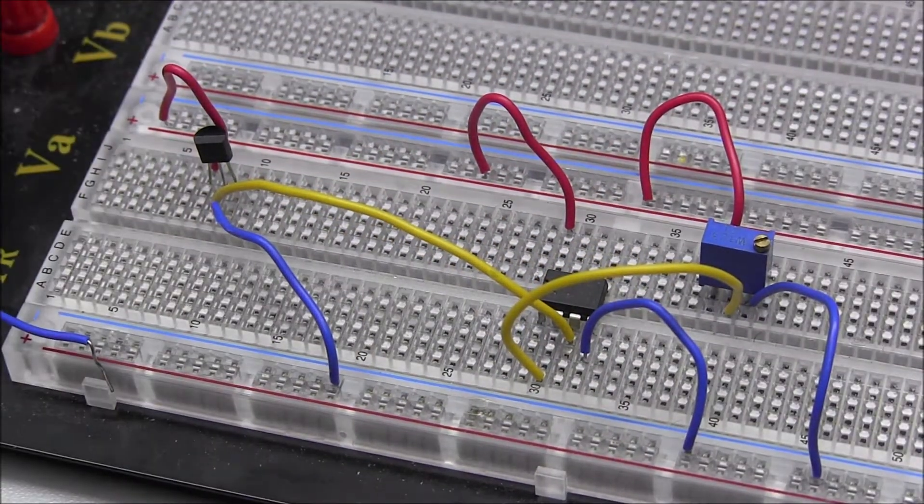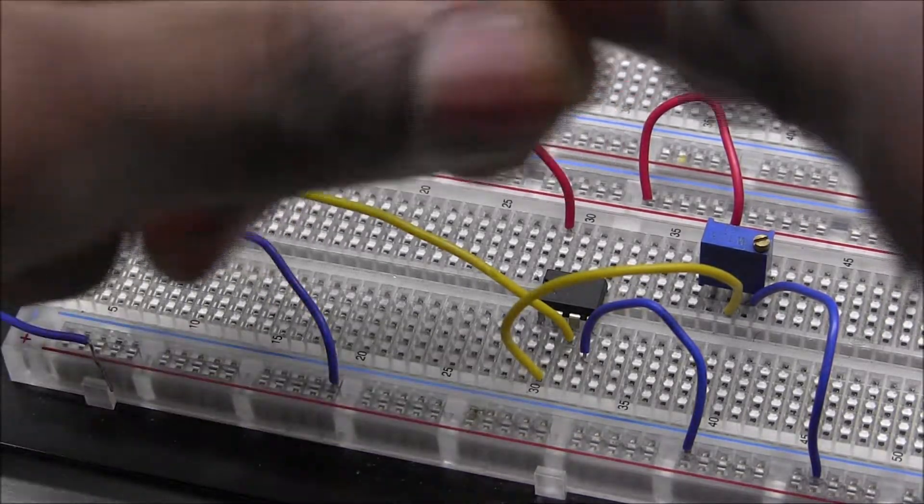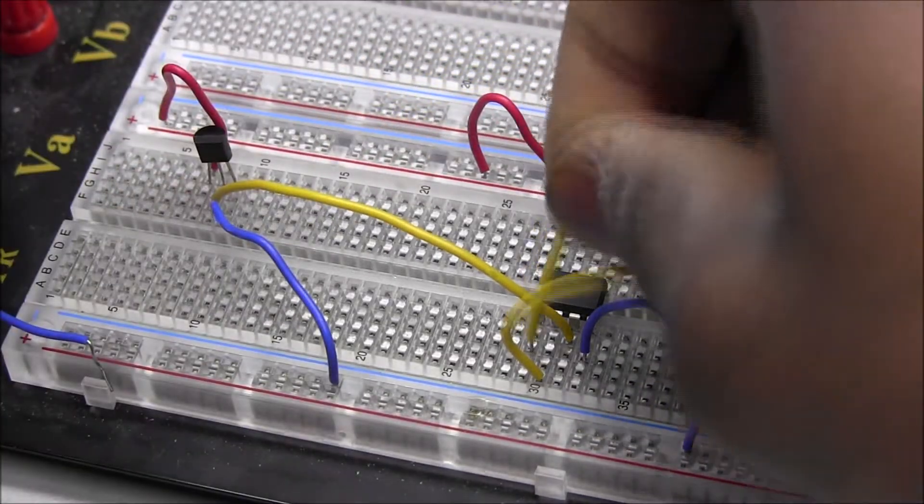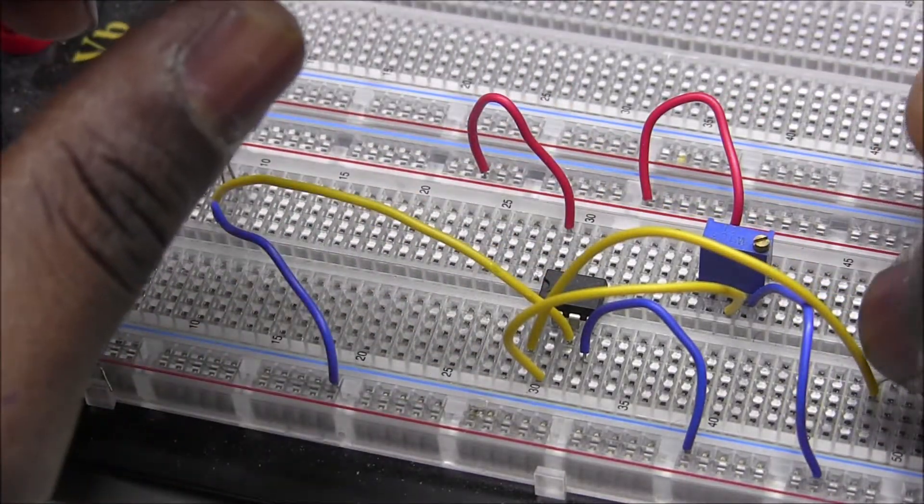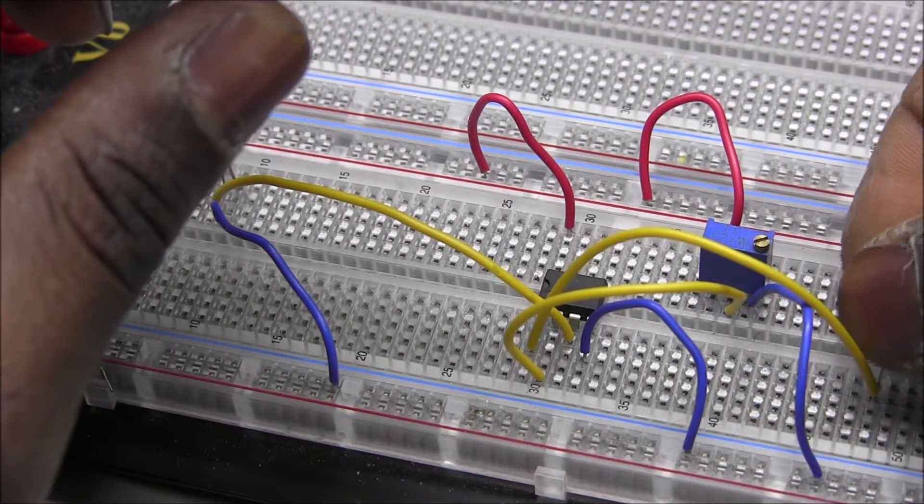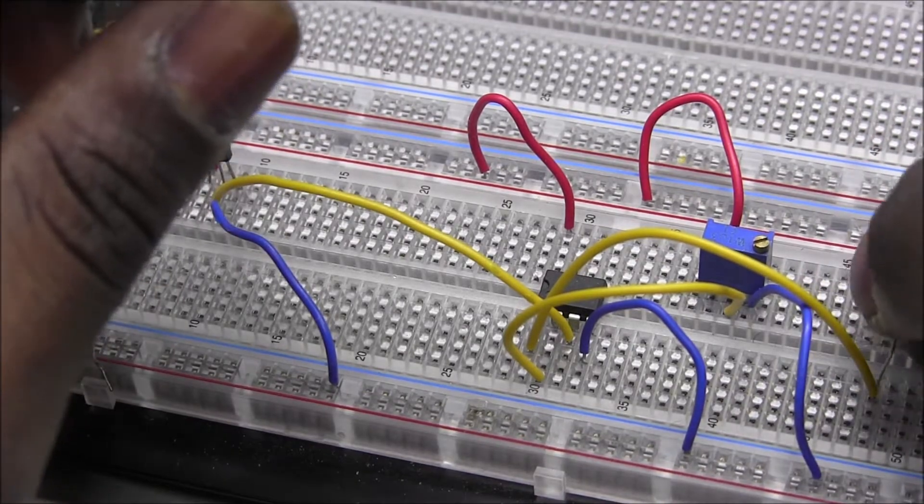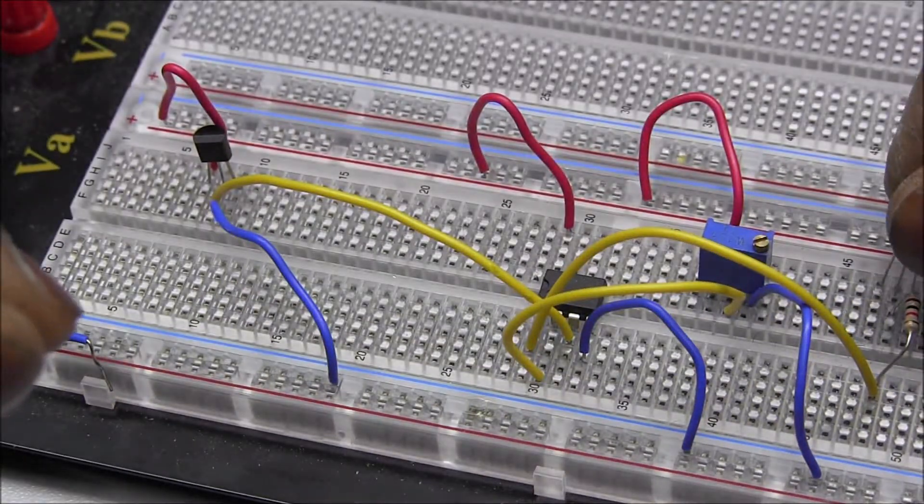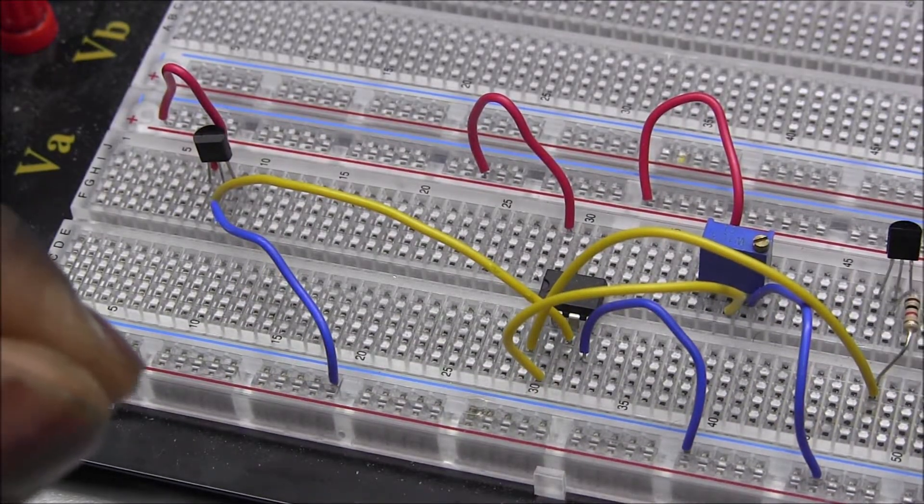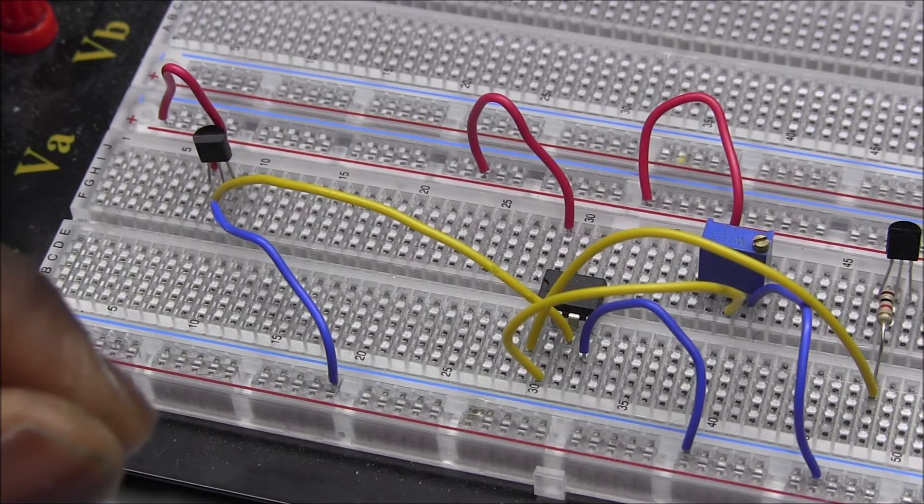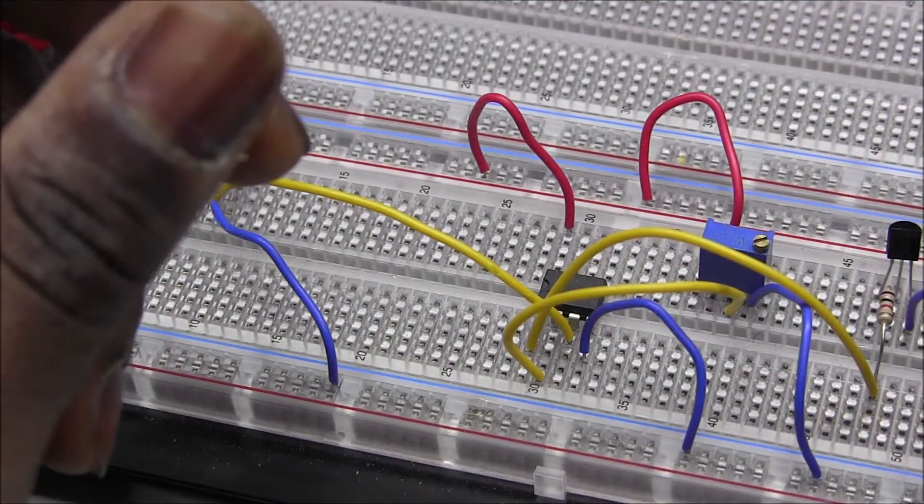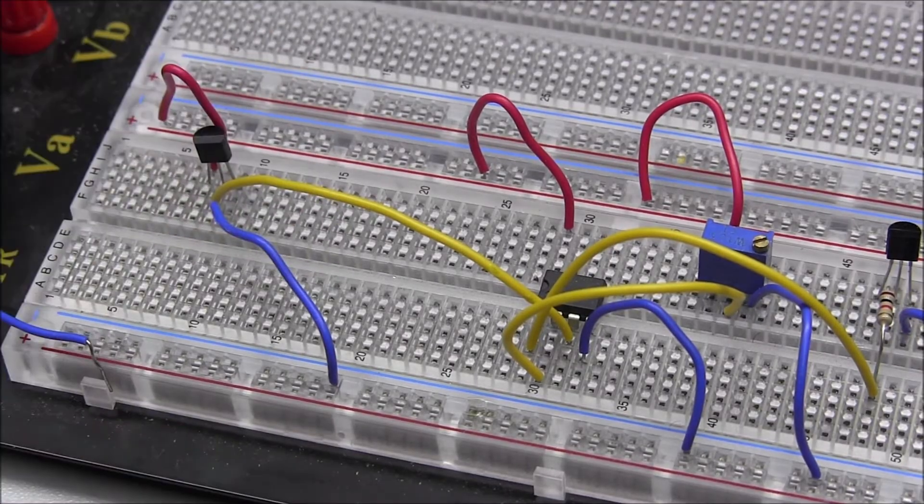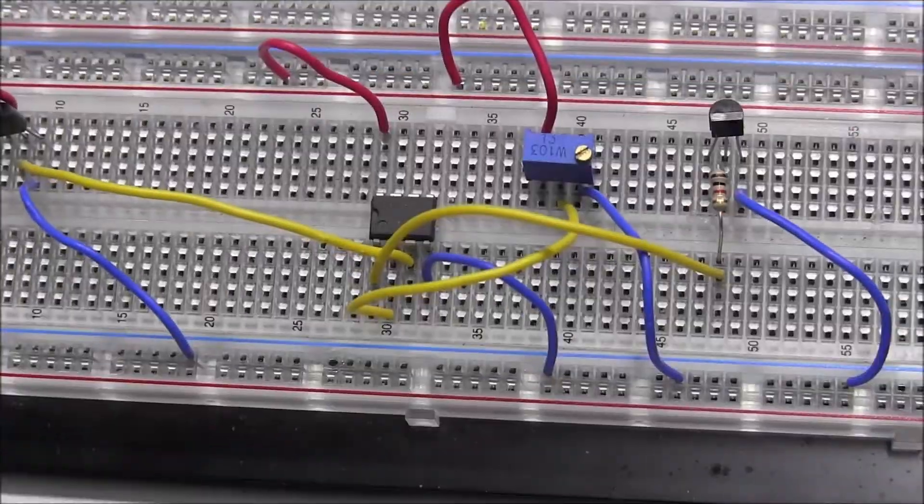Okay, and then pin 1 is the output. The output via transistor goes to the... via resistors goes to the transistor. Okay, and then we have to ground the transistor.